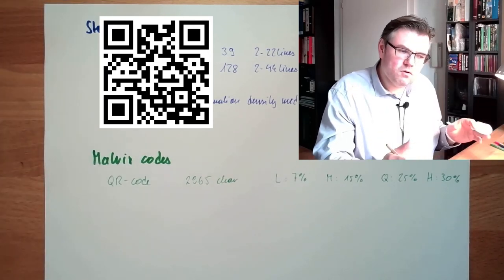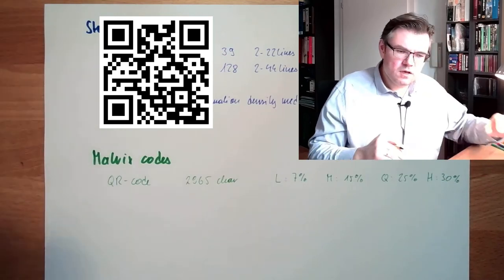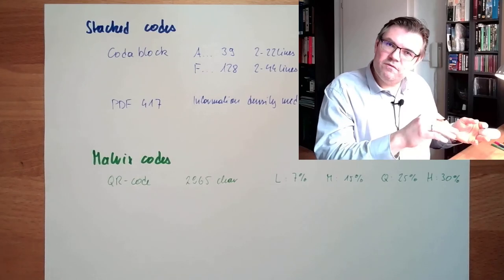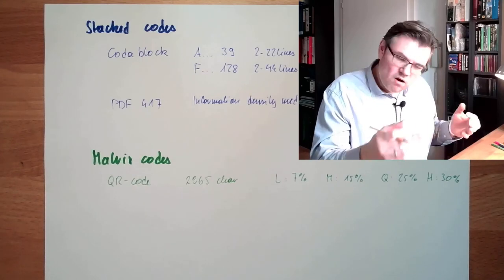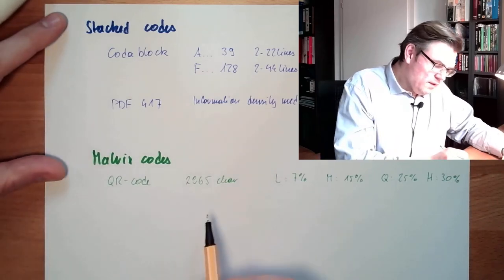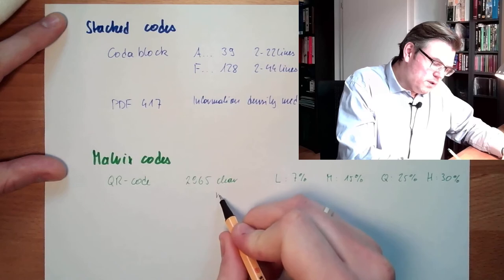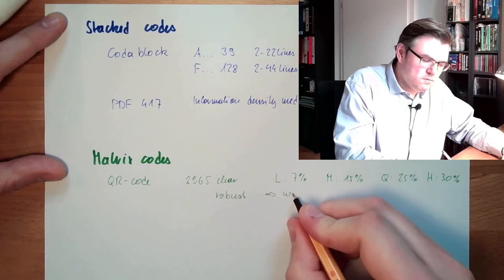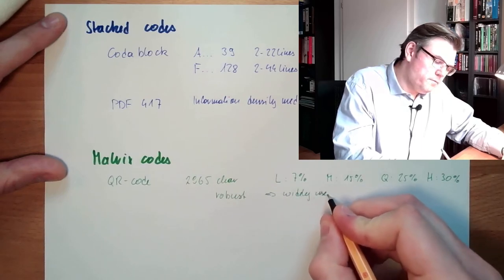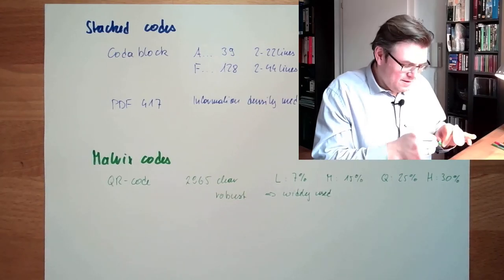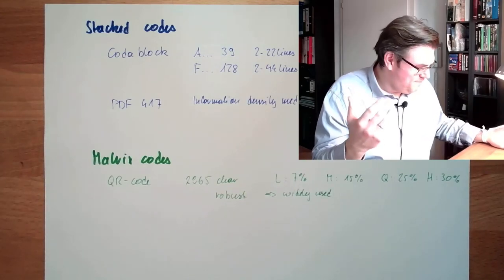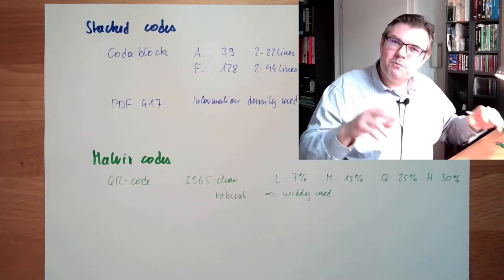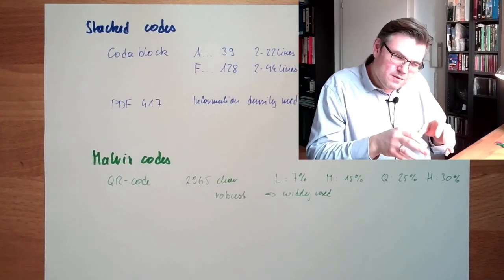The QR code has a special pattern that can be recognized for orientation - where it's left, right, bottom, top. These error correction levels make them very robust in reading, so they are widely used. There are even picture QR codes where the code itself contains information but also gives a little picture.